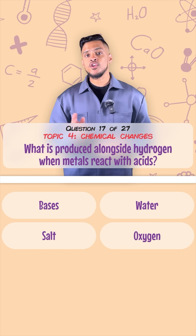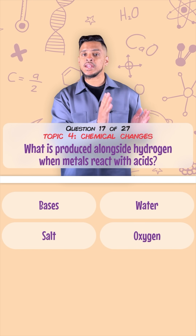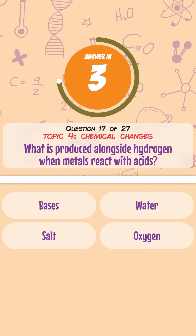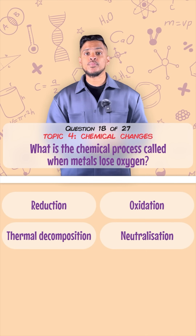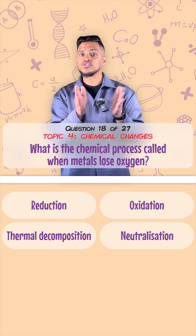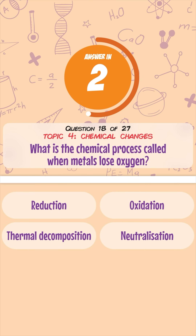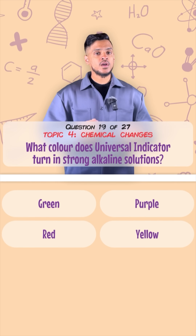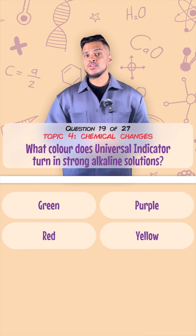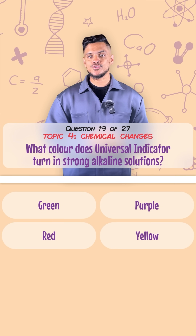What's produced alongside hydrogen when a metal reacts with an acid? It forms a salt. What's the chemical process called when a metal loses oxygen? That's called reduction.